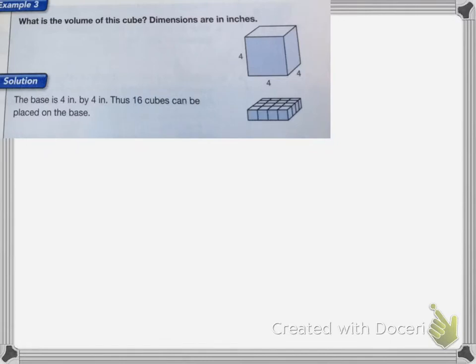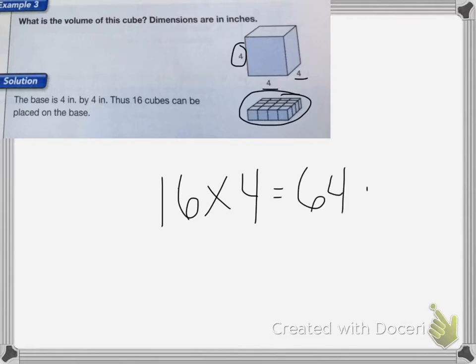This one wants to know the volume of the cube. Since the base is 4 by 4 inches, that means I can fit 16 cubes on the base of this shape. My height is 4 as well, so that means I'm going to multiply the base, 16 times the height of my object, which is 4. 16 times 4 is equal to 64 inches cubed. With volume we always do inches cubed.